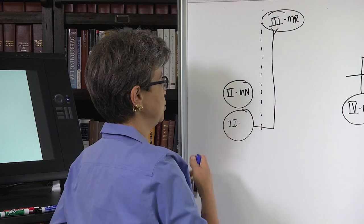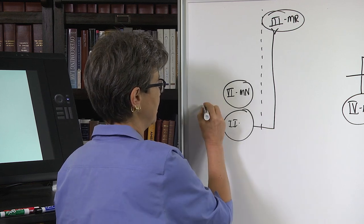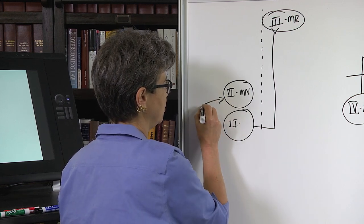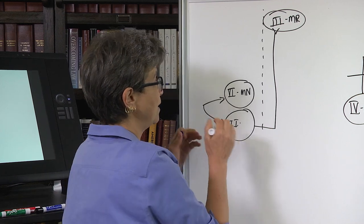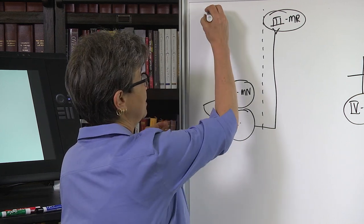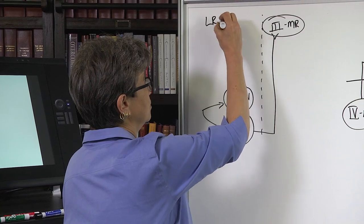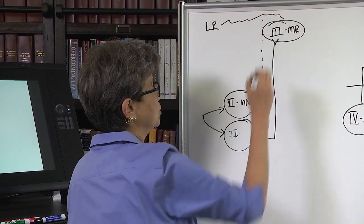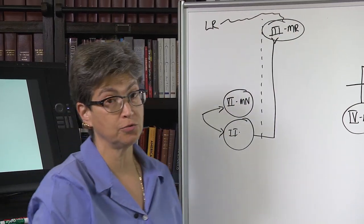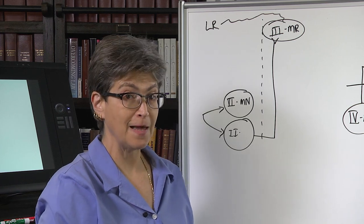So whatever message gets delivered here also gets delivered here. That means that the lateral rectus on this side is yoked to the medial rectus on the contralateral side. And that's a pair.